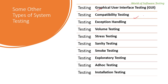The next type is compatibility testing. Compatibility testing is done to ensure that the developed product is compatible with different browsers, hardware platforms, operating systems, and databases as per the requirement document — whatever is defined in the requirement document must be compatible.